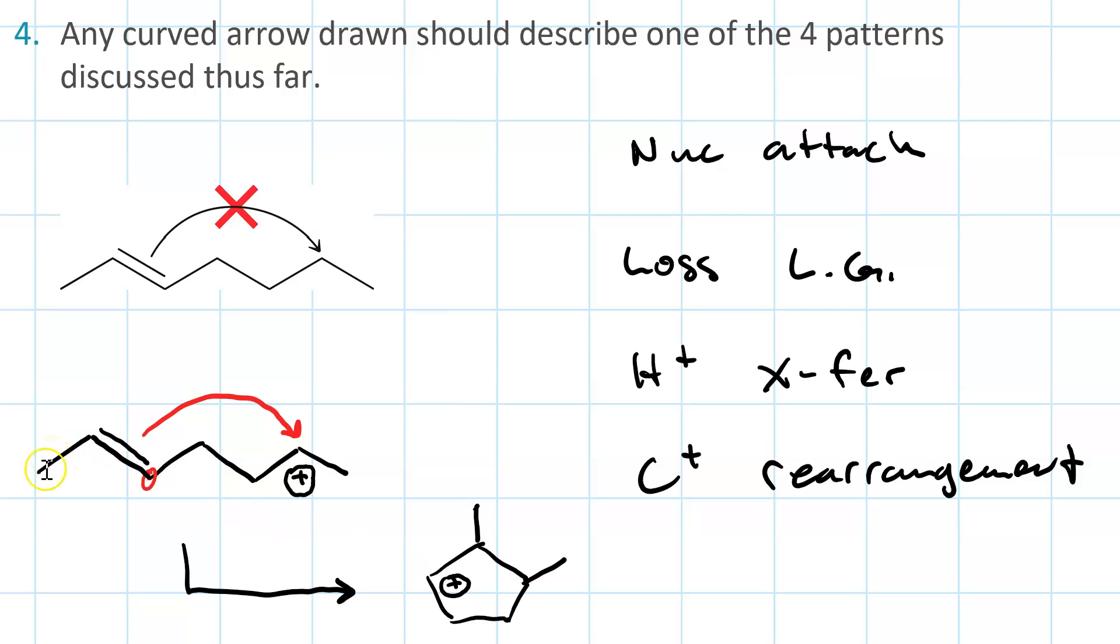This methyl group on the end of the molecule here is that methyl group. This methyl group here is this methyl group. And then, the pair of electrons represented by the head of the curved arrow went into forming this sigma bond.